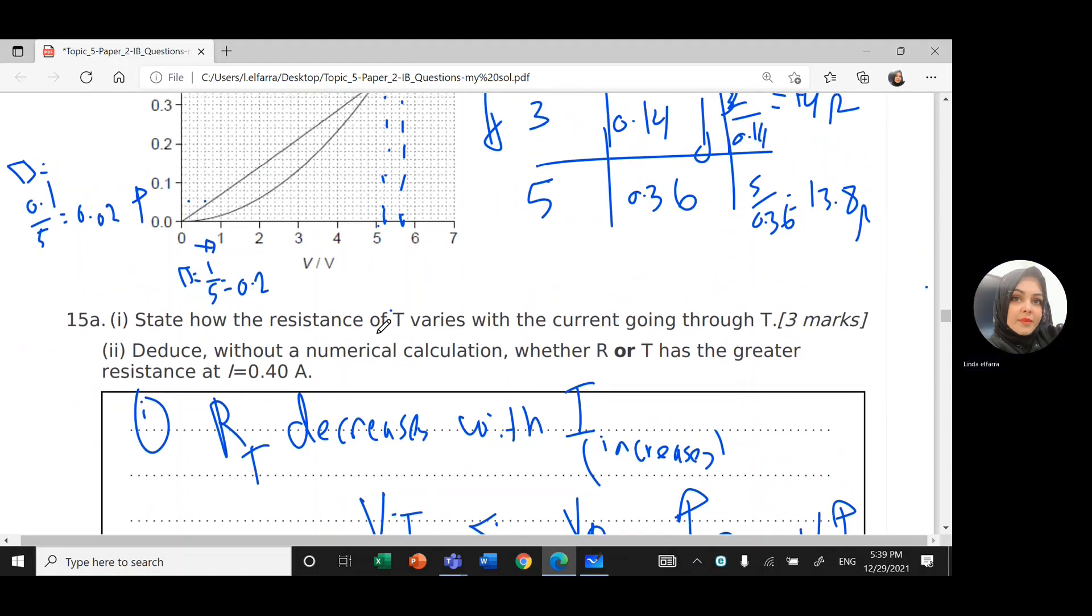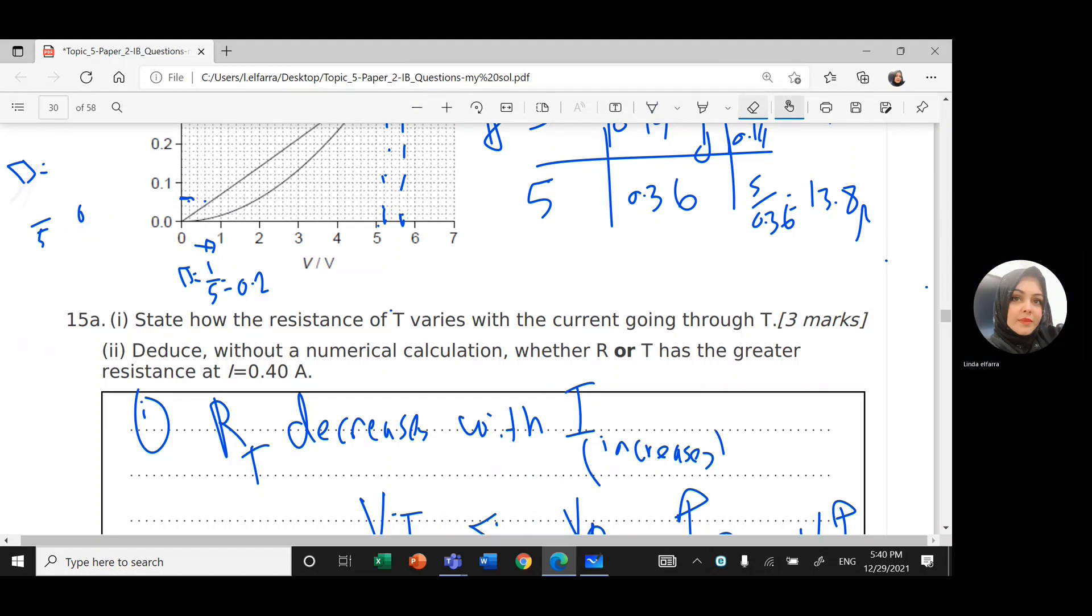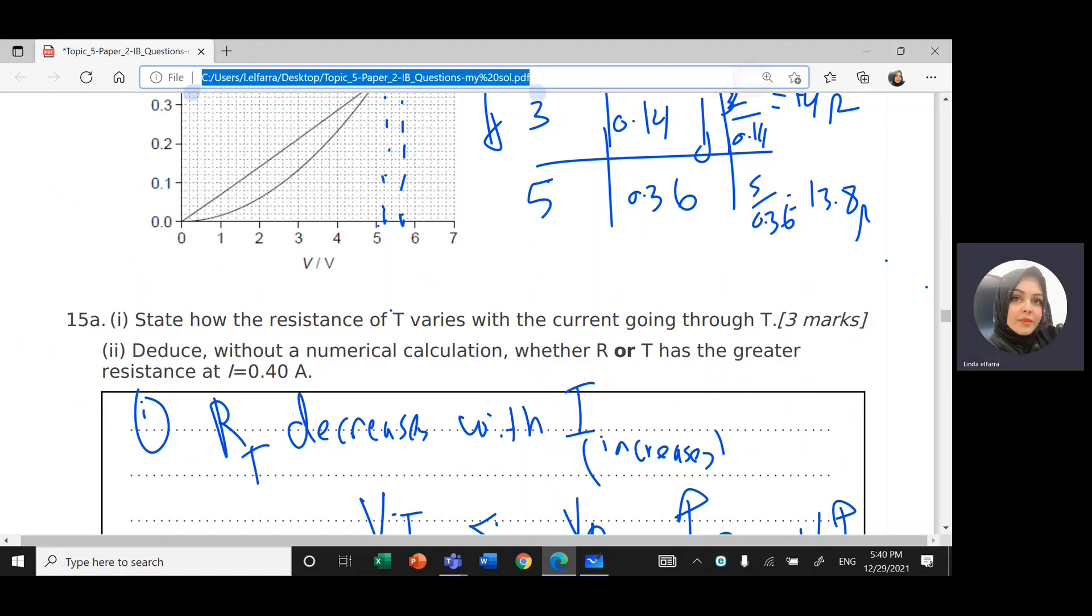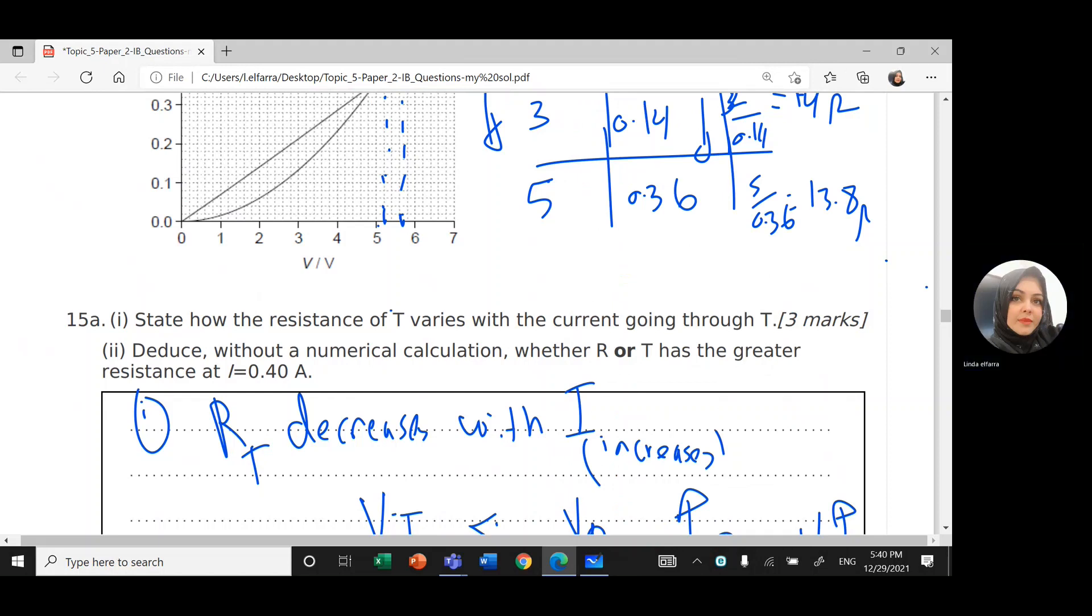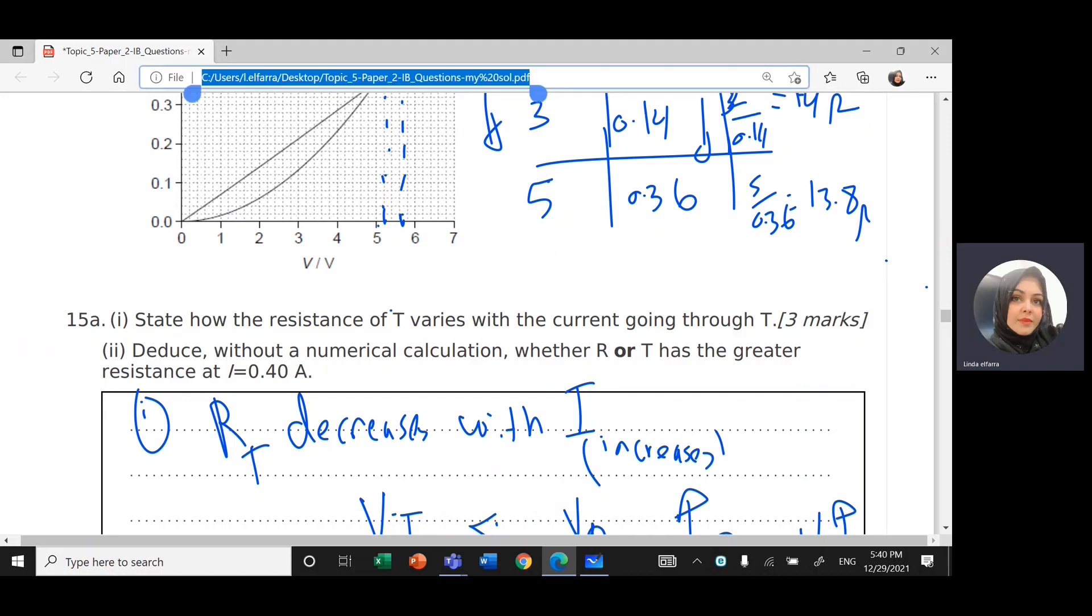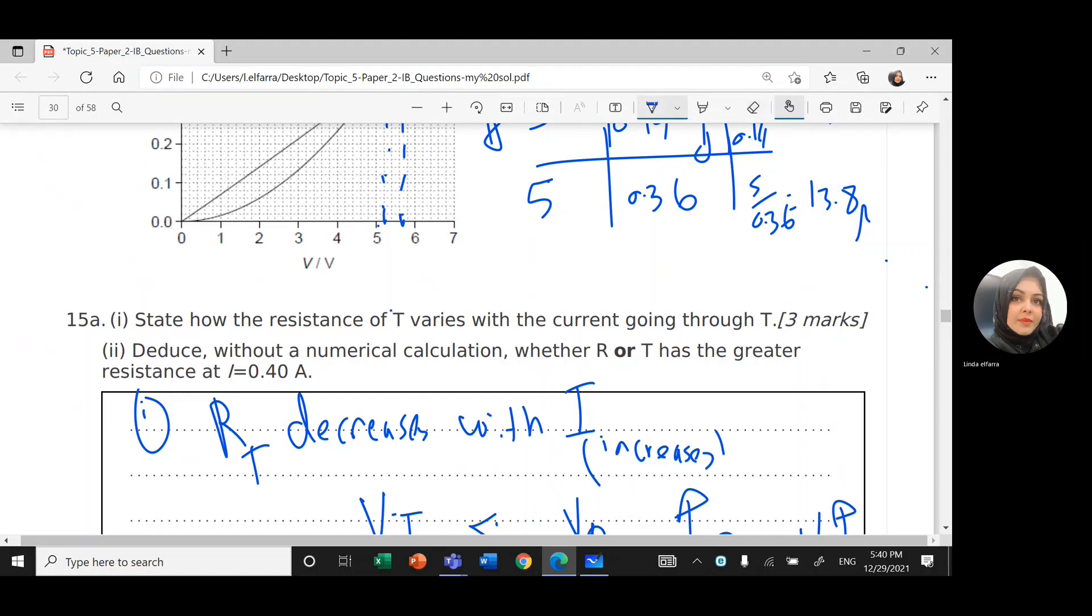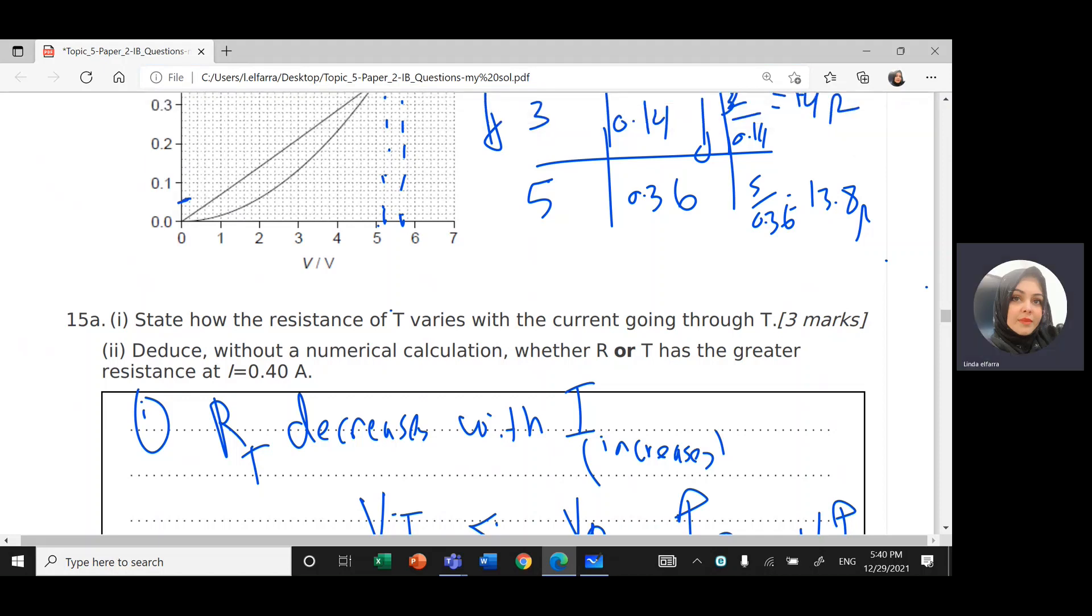So the voltage across VR should be equal to the voltage across VT. But the current, if you add them, it should give you 0.2. So if I take two points, if I take this point here, here, this is point, let's just erase this one. I'm going to take point 0.6.